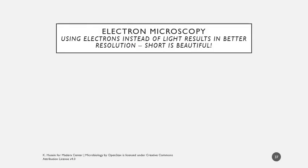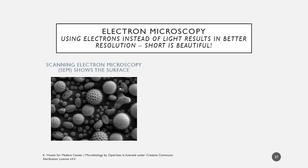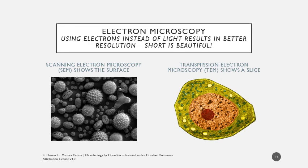For electron microscopy, electrons are used instead of photons, resulting in really good resolution after extensive sample preparation. Scanning electron microscopy shows the surface — you can't really see internal structures. Transmission electron microscopy shows a slice. They're prepared very differently, but both use electrons instead of light to visualize images.